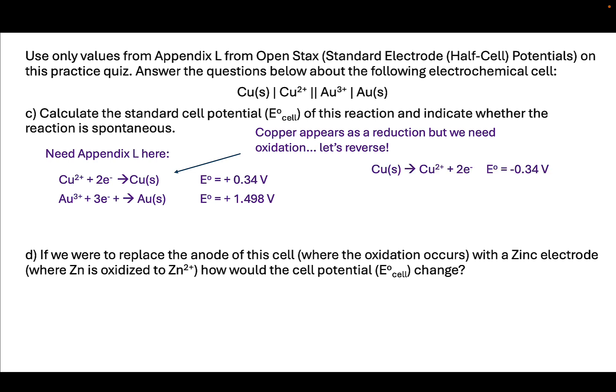The gold half reaction appears exactly as we had it before, but the copper is a reduction from the table and we need an oxidation. One way we can do this is we can just reverse it and say, well, then the half cell potential is going to be the negative of what it was before. We're just switching the reaction and we're changing the sign of the cell potential. This is fine to do, and we end up with the following.